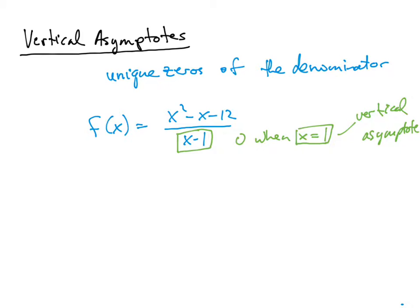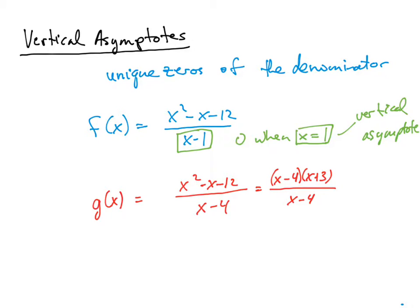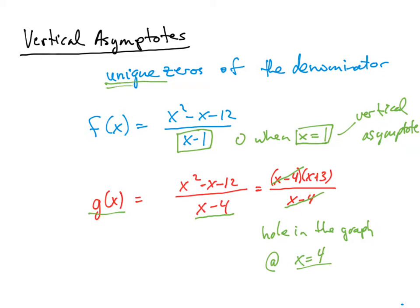What we mean by unique zeros: let's use a second rational function with the same numerator x squared minus x minus 12 but denominator x minus 4. Factoring the numerator gives x minus 4 times x plus 3, and in the denominator we have x minus 4. Because x minus 4 is a common factor, it cancels. So we don't say x equals 4 is a vertical asymptote — instead, there's a hole in the graph at x equals 4. When we input 4, the function is undefined, but because x minus 4 is not a unique zero, it's a hole, not a vertical asymptote.